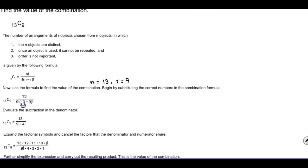Now we're going to use order of operations, so the first thing we're going to do is take 13 and subtract 9, which gives us 4. So now we have 13 factorial divided by 9 factorial times 4 factorial.